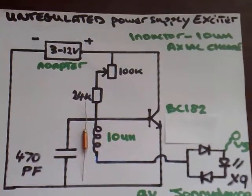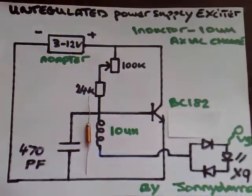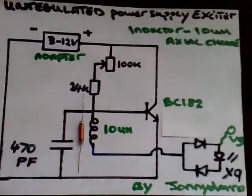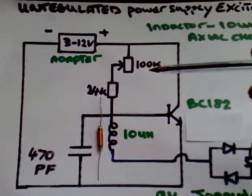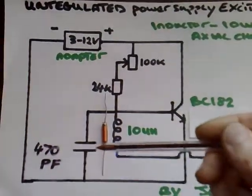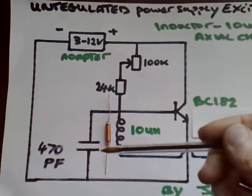Okay, this is an update on the unregulated power supply exciter. This is the updated circuit diagram I'm using, and the changes I've made include a 100k pot here and a 470pF capacitor from base to emitter.